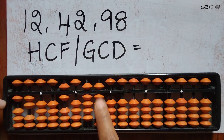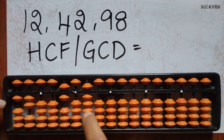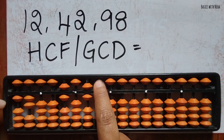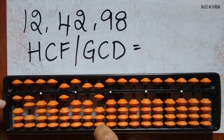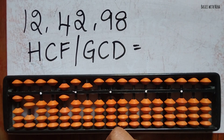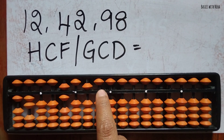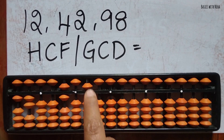Subtract 6 from each: minus 6, minus 6, minus 6, minus 6 — I have 10 now. The three numbers are now different. The smallest number is 6, so I subtract 6 again and I have 4.